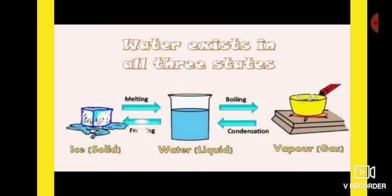When ice melts, it becomes liquid. When water boils, it becomes gaseous. When water vapor condenses and cools, it becomes liquid again. When the liquid freezes, it becomes solid. Melting means solid to liquid. Boiling means liquid to gaseous. Condensation means vapor to liquid. Freezing means liquid to solid. These are the states of matter.